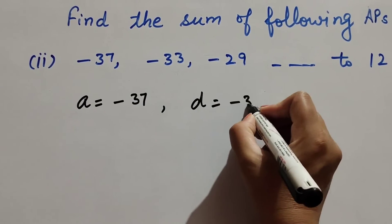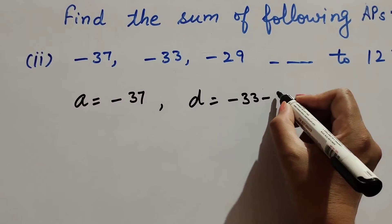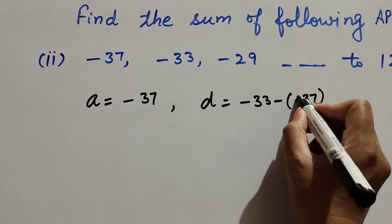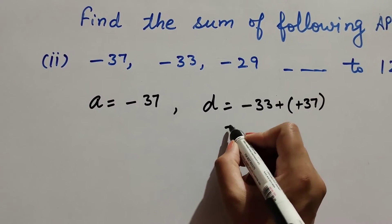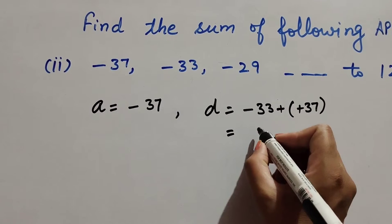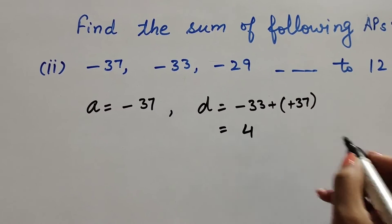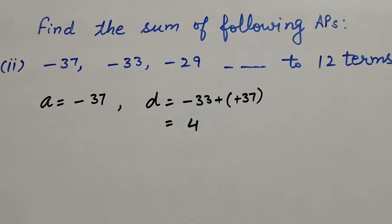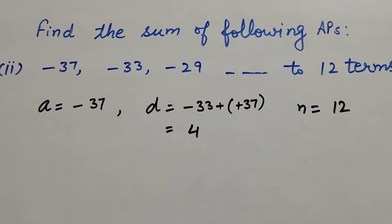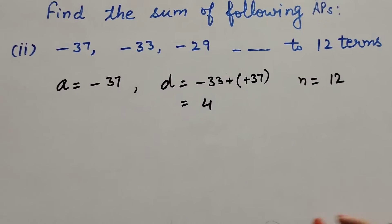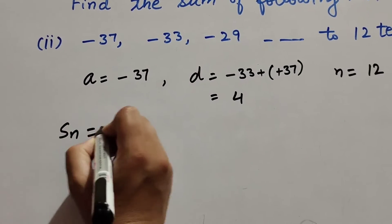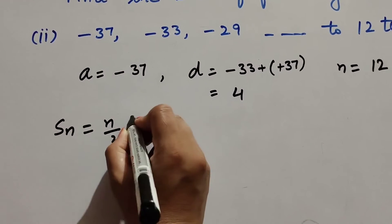Common difference d is equal to second term minus first term: −33 minus (−37) = −33 + 37 = 4. So d = 4. Total number of terms n is equal to 12. We use the formula Sₙ = n/2 × (2a + (n−1) × d).